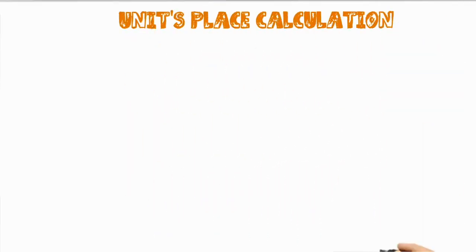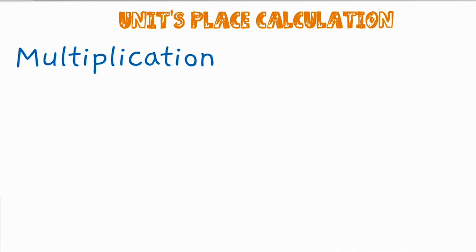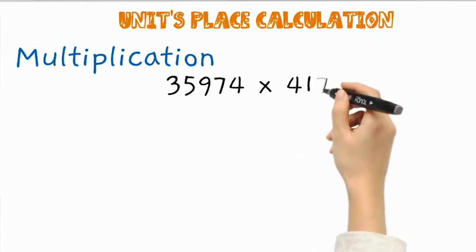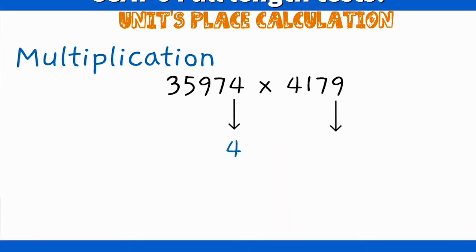Let us have a look at units place value calculation in multiplication operation. Consider the product of two numbers: 35974 and 4179. To obtain the units place value of this product, first separate the units place digit from every number. In the first number the digit is 4, and in the second number that is 9.